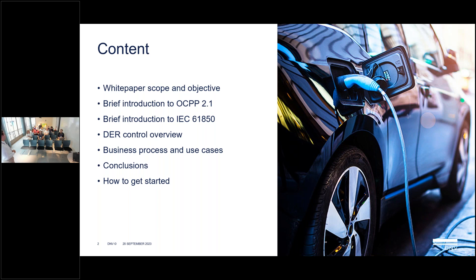I'll give a brief introduction about OCPP 2.1 — a session after this one has a very elaborate session about the new features, but it's good to get a brief picture of what is new and how we will be using it in combination with IEC 61850. I'll also give a brief introduction about IEC 61850, which might be a new standard for most of you as it's a more utility-oriented standard for system automation. Then we'll talk about the direct control overview, defined business processes and use cases, examples of different curve limits and setpoints, conclusions, and how to get started with documentation.